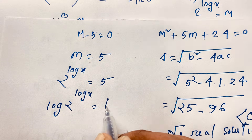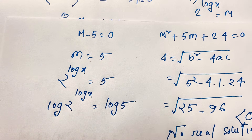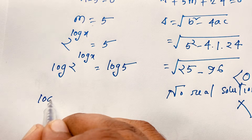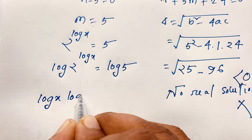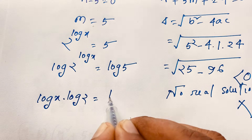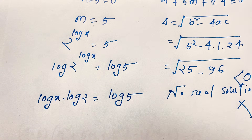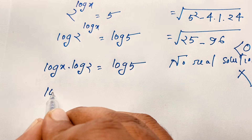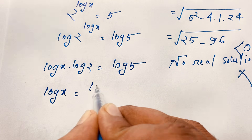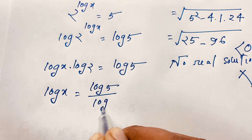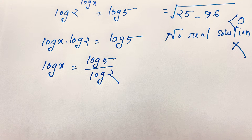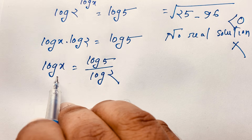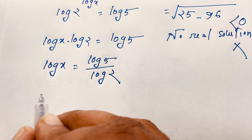Applying the logarithm power rule, this becomes log x times log 2 equals log 5. Dividing both sides by log 2, we get log x equals log 5 over log 2. So log base 10 of x equals log base 10 of 5 divided by log base 10 of 2, which by the change of base formula equals log base 2 of 5.